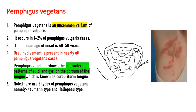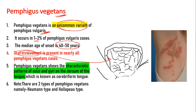Another variant is pemphigus vegetans, which is an uncommon variant of pemphigus vulgaris — occurring in one to two percent of pemphigus vulgaris cases, which itself occurs in one to five individuals per million. The median age of onset is the same. Oral involvement is characterized by the presence of sulci and gyri on the dorsal surface of the tongue, and cauliflower-shaped lesions in the axilla and inguinal regions. There are two subtypes: the Neumann type and the Hallopeau type.